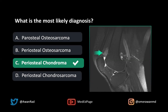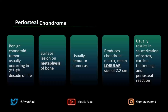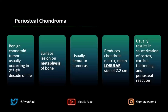I'll explain why this is not the other three entities in the differential. To understand this, a periosteal chondroma — or juxtacortical chondroma — is a benign chondroid tumor that produces cartilage. It usually occurs early in life, in the second to fourth decade. These are surface lesions typically along the metaphysis of the bone, as in this index case along the distal femur. They usually occur in the femur and humerus.